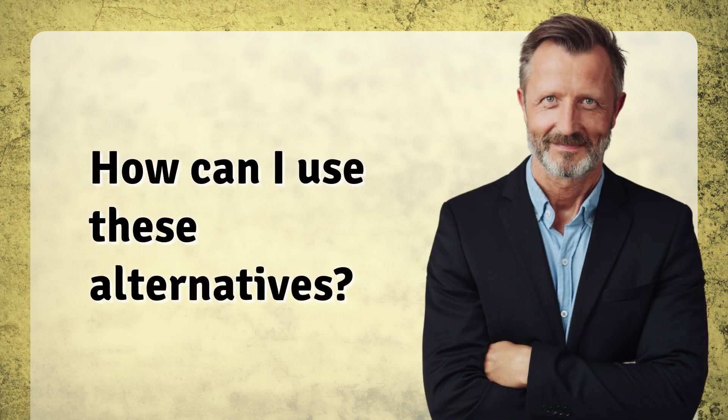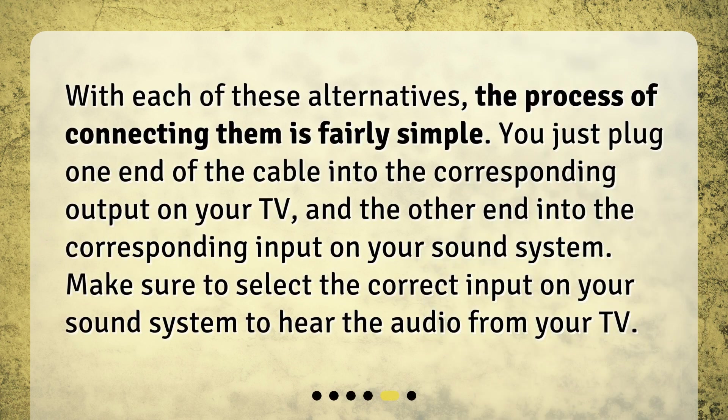How can I use these alternatives? With each of these alternatives, the process of connecting them is fairly simple. You just plug one end of the cable into the corresponding output on your TV, and the other end into the corresponding input on your sound system. Make sure to select the correct input on your sound system to hear the audio from your TV.